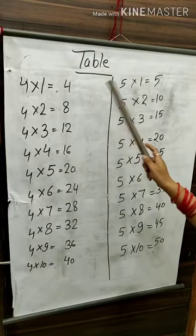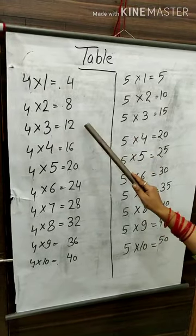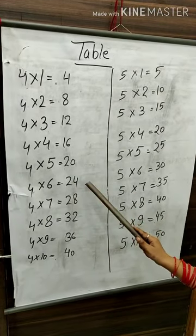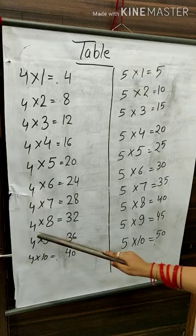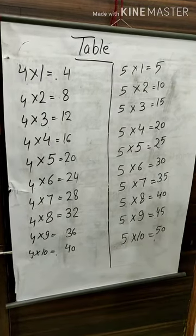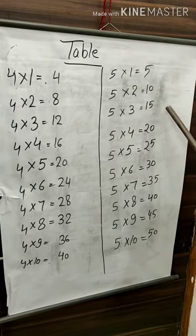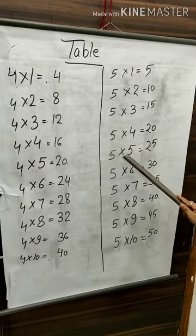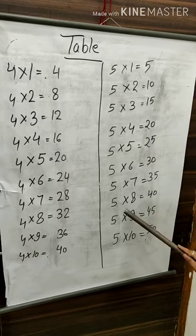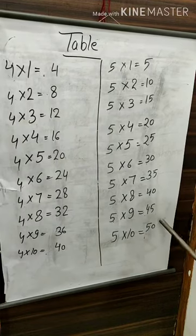Table of four and five. Four ones are four. Four twos are eight. Four threes are twelve. Four fours are sixteen. Four fives are twenty. Four sixes are twenty-four. Four sevens are twenty-eight. Four eights are thirty-two. Four nines are thirty-six. Four tens are forty. Five ones are five. Five twos are ten. Five threes are fifteen. Five fours are twenty. Five fives are twenty-five. Five sixes are thirty. Five sevens are thirty-five. Five eights are forty. Five nines are forty-five. Five tens are fifty.